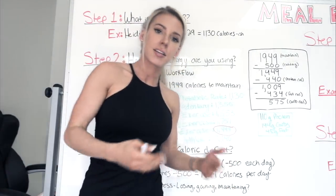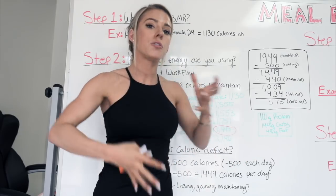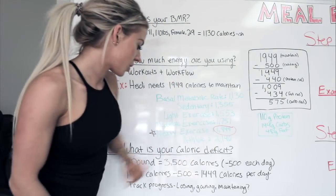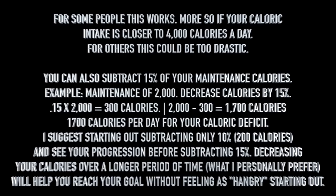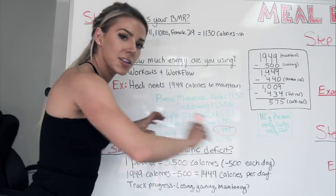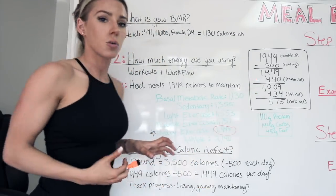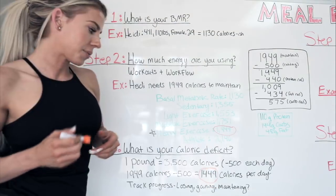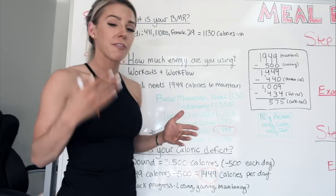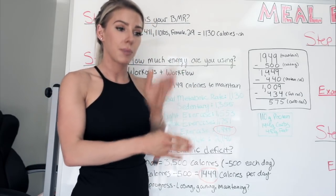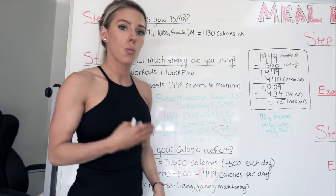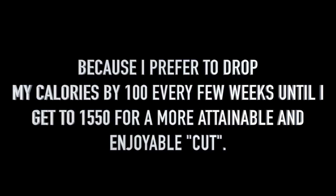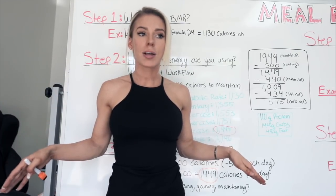Step three is your caloric deficit. When your body is in a caloric deficit, it's forced to find other ways to fuel itself. One pound equals 3,500 calories, so across seven days we subtract 500 calories per day. Taking my 1,949 maintenance calories minus 500 gives me 1,449 calories — and I eat that every day and track my progress. For reference, the lowest I went even when competing was around 1,550 calories, and I got super lean.